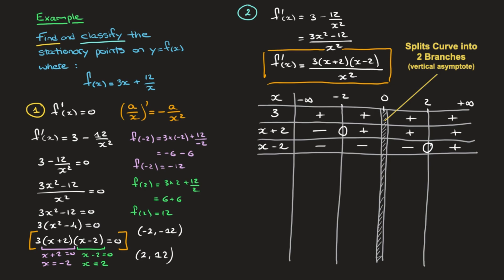Finally, I move to the last factor: the denominator x squared. x squared would equal 0 at x equals 0, but that's a forbidden value so we don't write 0 there. For any other value of x, x squared is always positive, so I write positive in all four cells.